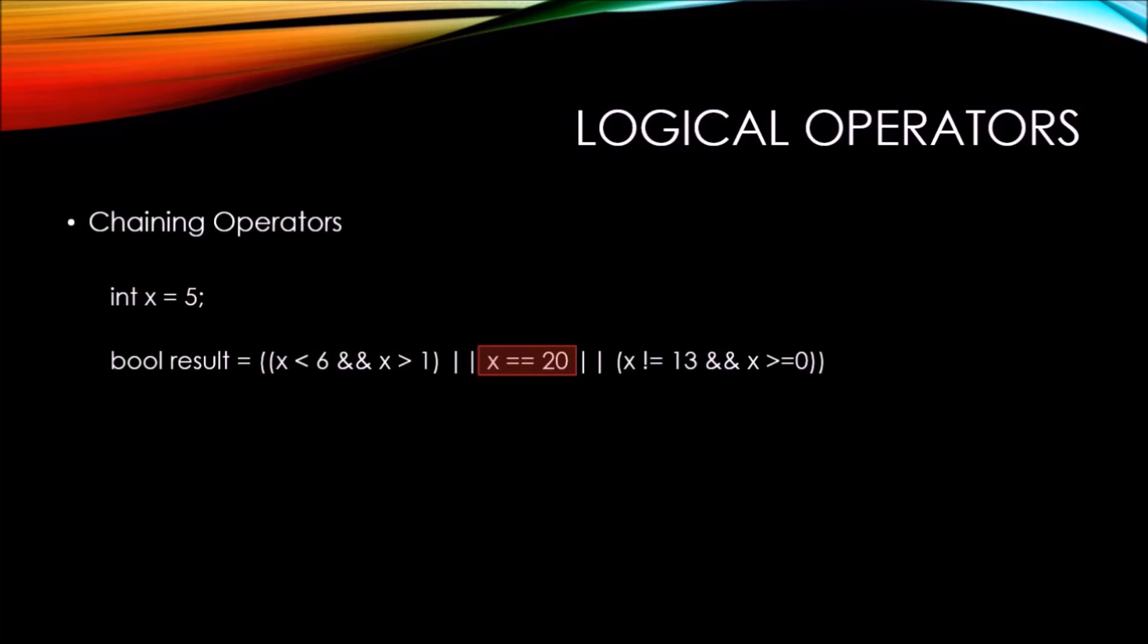First, we have x equals 20 which returns false. But since the OR operator is there between the x equals 20 and the previous set of conditions here, that means either one of these two sides of the OR operator can return true and the OR operator itself will return true. So, we still have a state of true for this certain set of conditions.